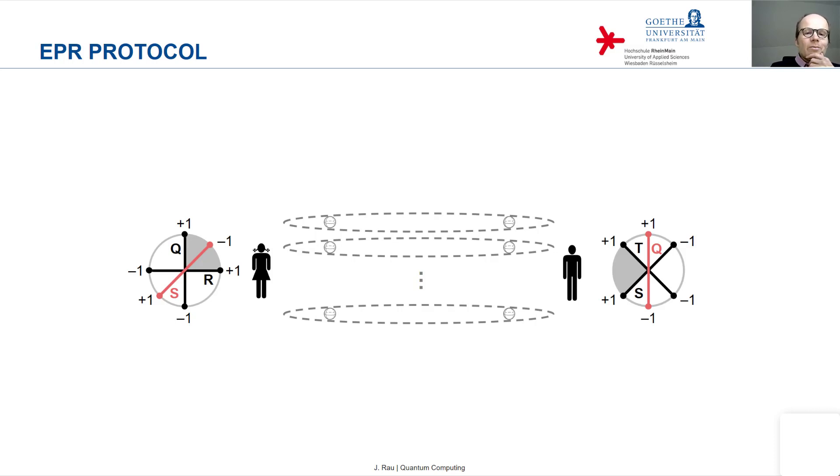you have sufficiently many Bell pairs for each combination, that with the desired accuracy, you can determine the expectation value of that observable A that we saw on the previous slide.